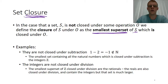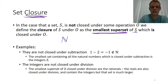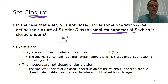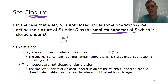We talked about the natural numbers and addition, and we said the natural numbers are closed under addition. So the smallest set that has all of the natural numbers in it and is closed under addition is the natural numbers themselves. Therefore the natural numbers is the closure of the natural numbers under addition.